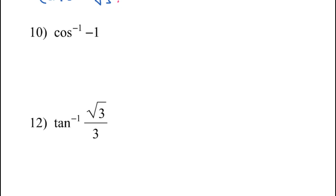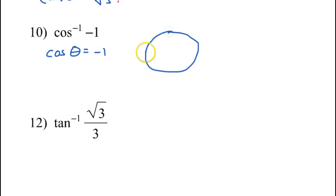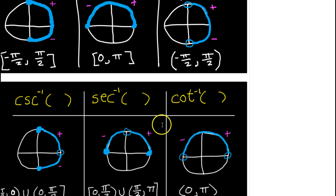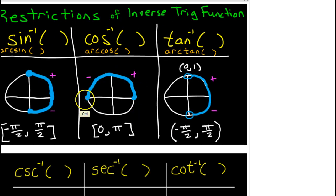Number 10: inverse cosine of negative 1. You should be asking yourself the cosine of what angle is equal to negative 1. For this we should go straight to the unit circle and think about quadrantal angles. Remember that cosine is an x value. So where is x equal to negative 1? That's only true in one place on the unit circle — the far left, negative 1 comma 0. This is the only place where the x value is negative 1, so the answer is pi. Inverse cosine is restricted to the top half of the unit circle and includes 0 and pi, so it falls within the restriction.